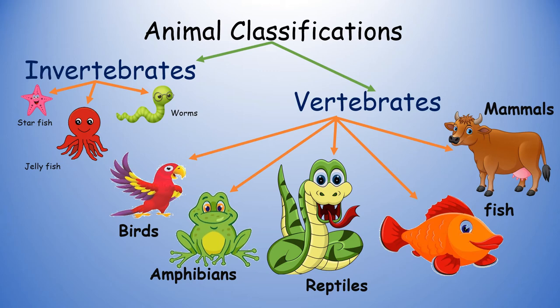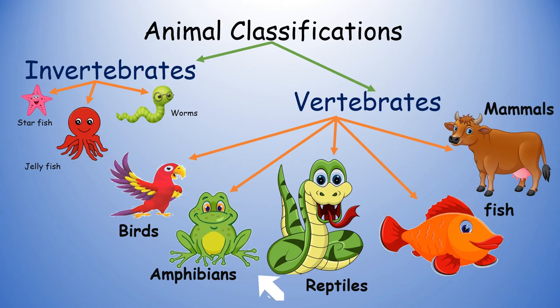Amphibians have gills and live in water as larvae but breathe air as adults. In short, we can say that amphibians are kinds of animals which can live both on land and water.